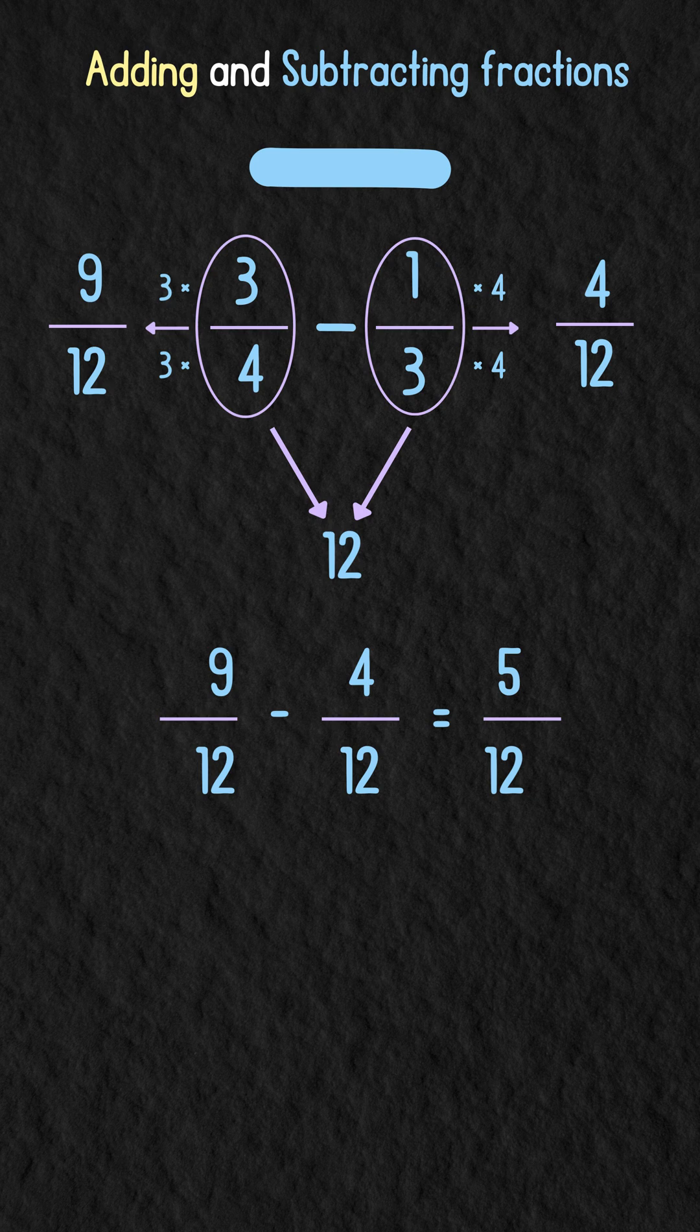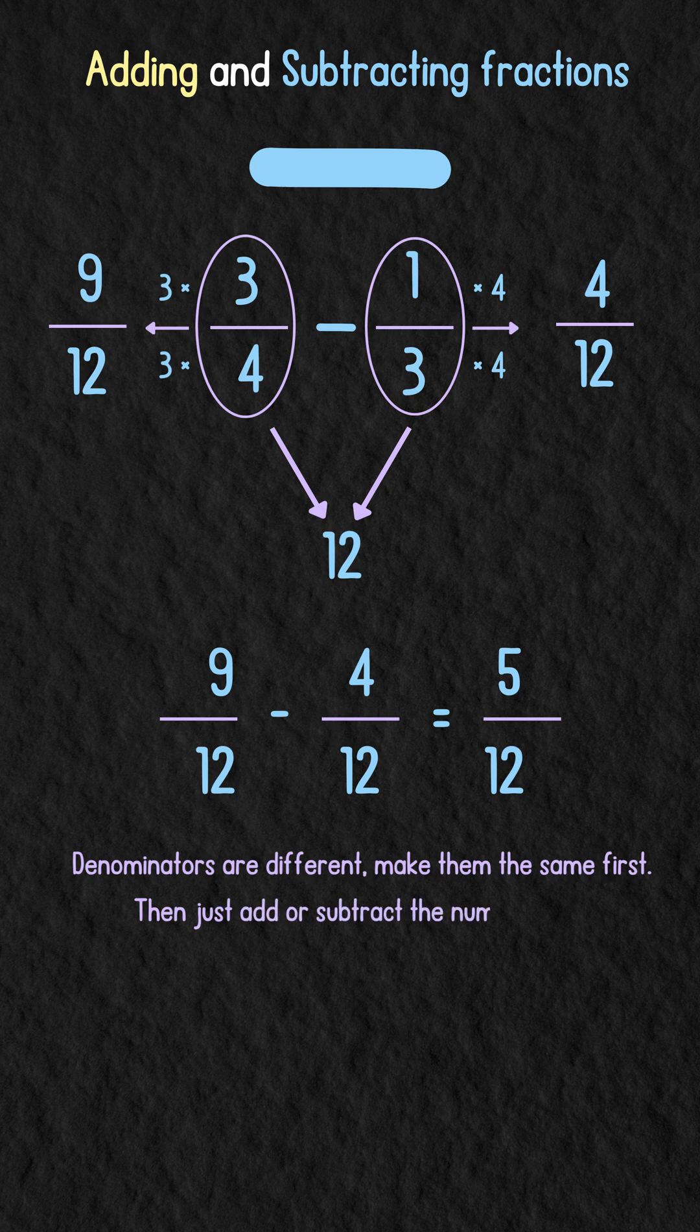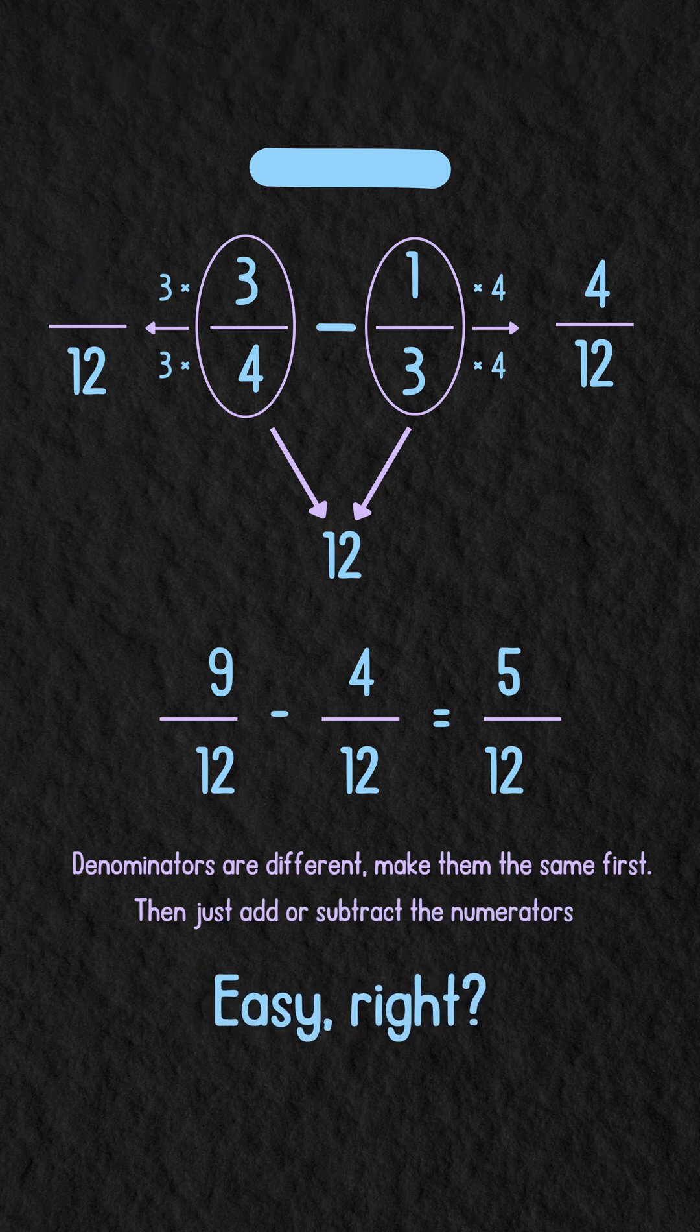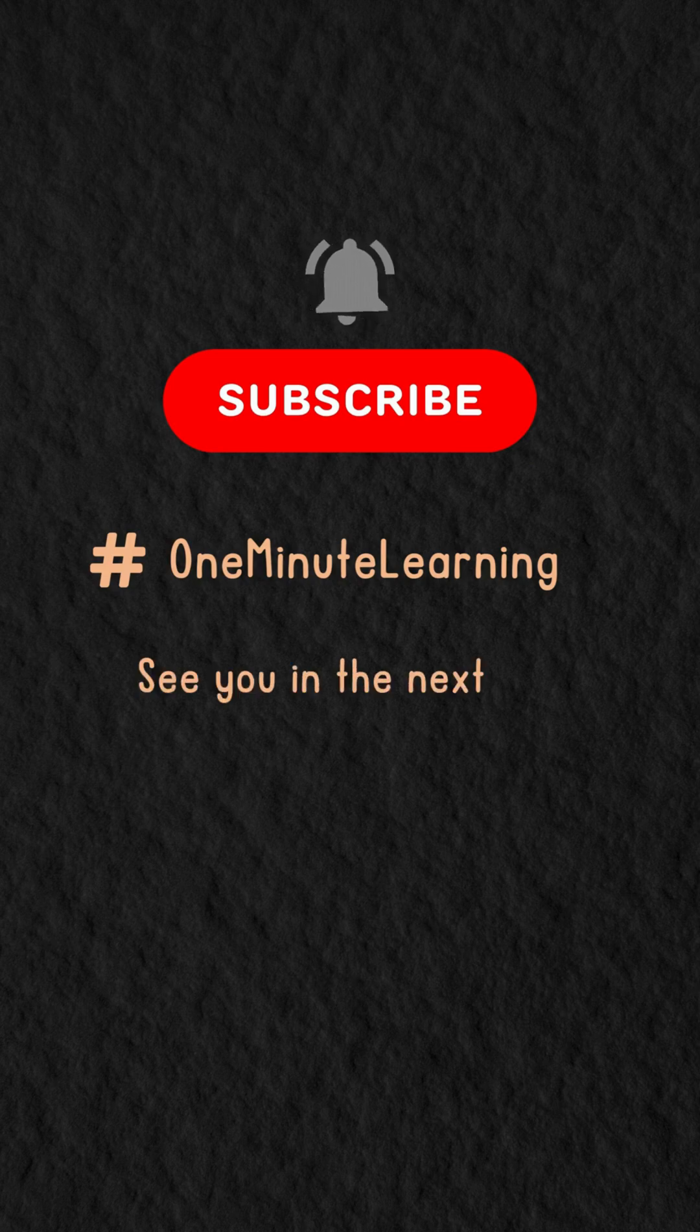So remember, if the denominators are different, make them the same first. Then just add or subtract the numerators. Easy, right? That's one minute of learning down! See you in the next one!